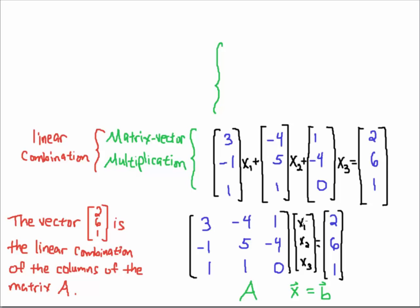You might be used to seeing matrix-vector multiplication as: you take this column and multiply it by this row, then take this column and multiply it by the second row, and take this column and multiply by the third row. When you examine what you're doing: you take this column vector and multiply it by the first row, taking X1 and multiplying it by the first component. For the next component, you take X1 and multiply it by 3.